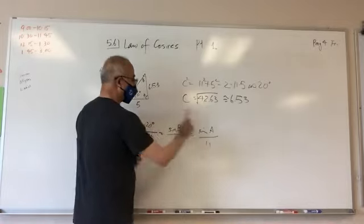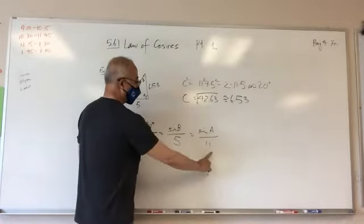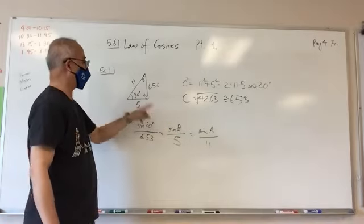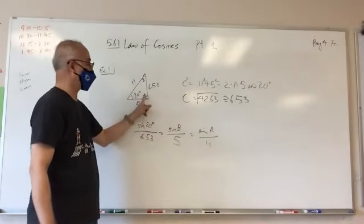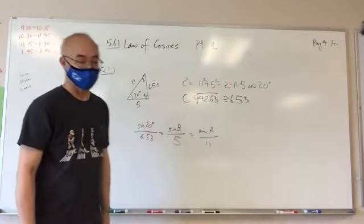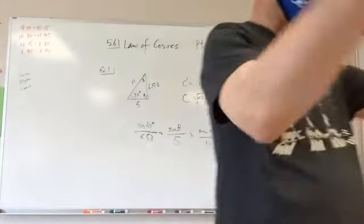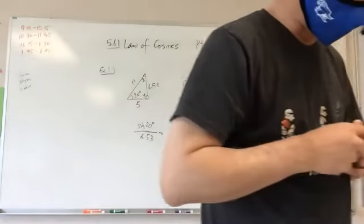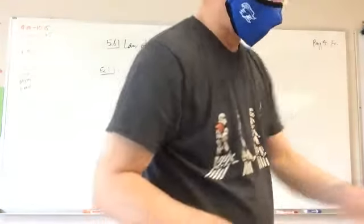Then I can find out what angle a is, or actually once I find angle b, I can just take 180 degrees minus 20 minus whatever I find here and call it angle a. That would solve the entire triangle.